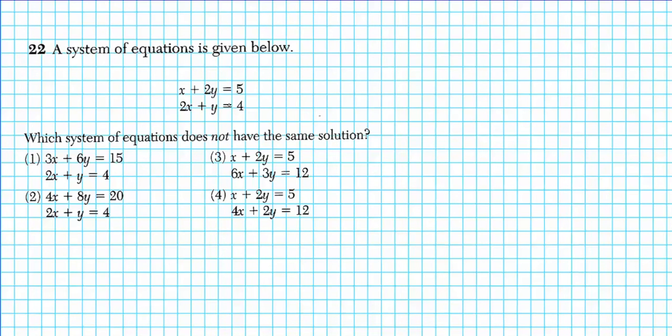Number 22. The system of equations is given below, so we have the system right here. Let's call this one 1 and call this one 2. Question: Which system of equations does not have the same solution? So if you have any of these equations multiplied by the integer multiple of another equation, any of those equations that is equal to that system will have exactly the same solution.